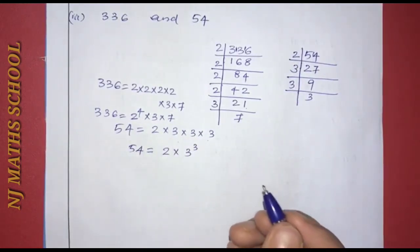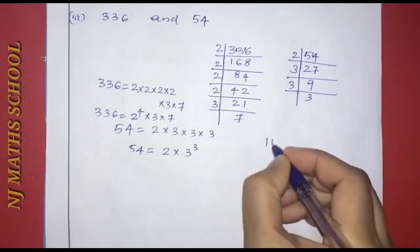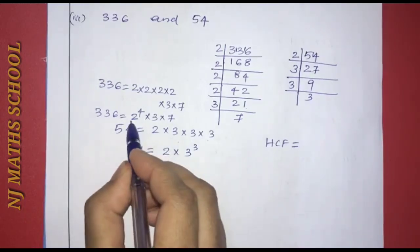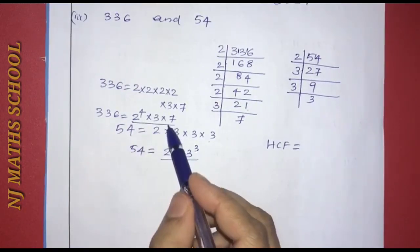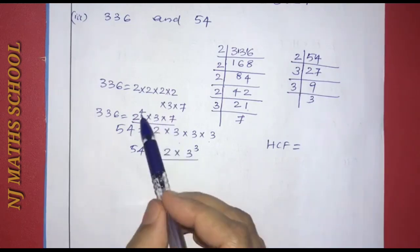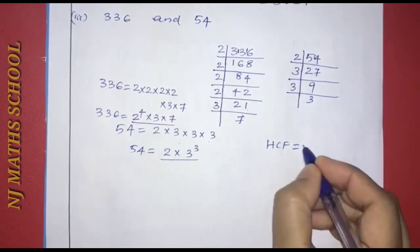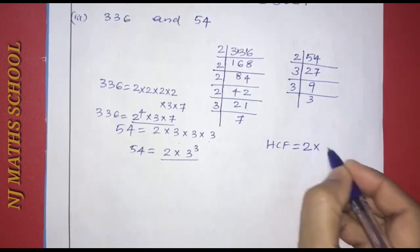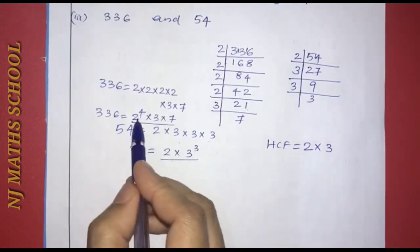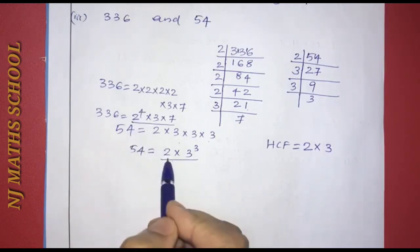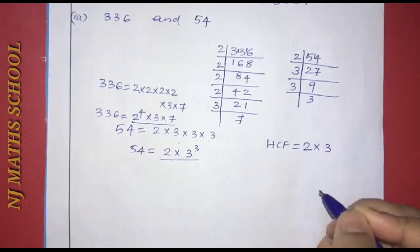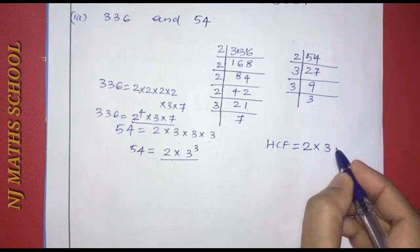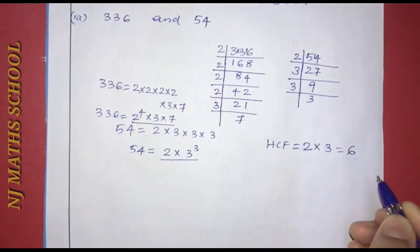Now finding HCF of 336 and 54. The common items in the prime factorization are 2 and 3, each taken at their smallest power. The smallest power of 2 is 1, and the smallest power of 3 is 1. So HCF equals 2 into 3, which is 6.